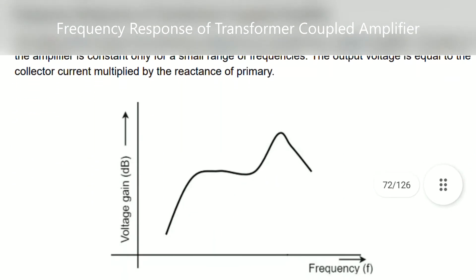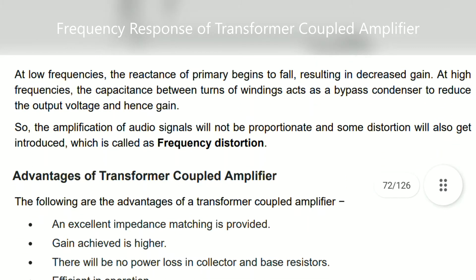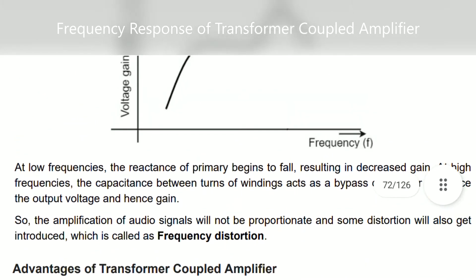This is the frequency response of a transformer coupled amplifier — we are plotting voltage gain versus frequency. At low frequencies, the reactance of the primary winding begins to fall, resulting in decreasing gain. At higher frequencies, the capacitance between the turns of the winding acts as a bypass condenser, reducing the output voltage and hence increasing gain.